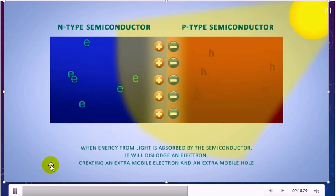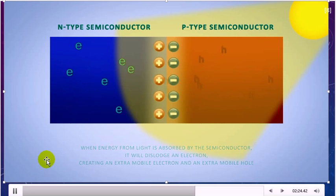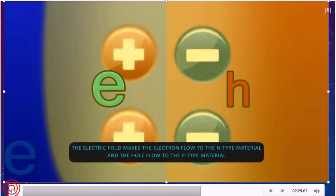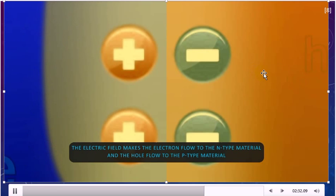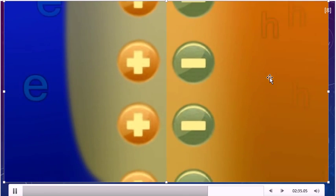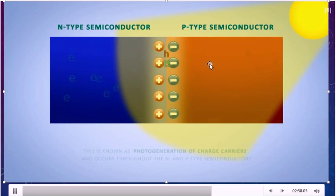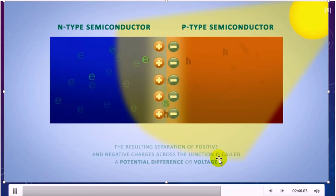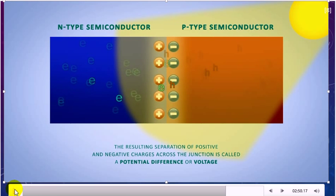When energy from light is absorbed by the semiconductor, it will dislodge an electron, creating an extra mobile electron and an extra hole. The electric field makes the electrons flow to the n-type material and the holes flow to the p-type material. This is known as photogeneration of charge carriers and occurs throughout the PN semiconductor. The resulting separation of positive and negative charge across the junction is called potential difference or voltage.